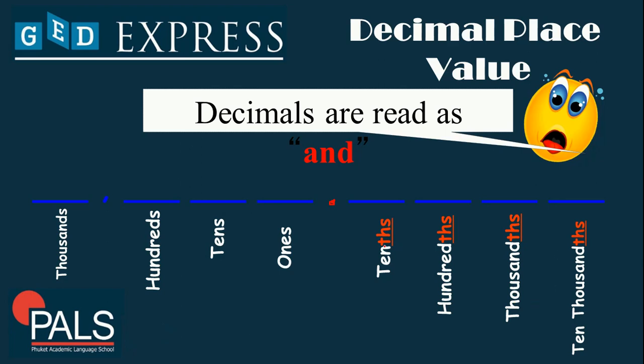Generally, you start with tenths instead of ones, then you add the '-ths' ending, and in this case that is read as '-and'.